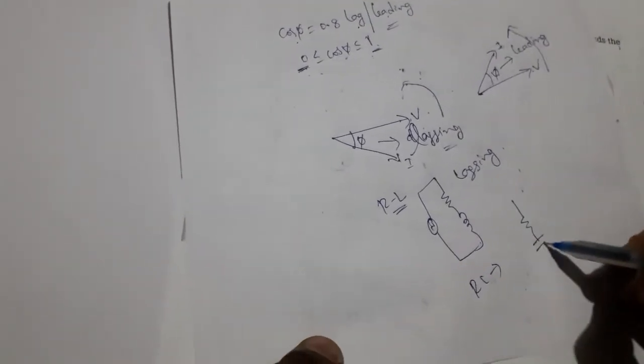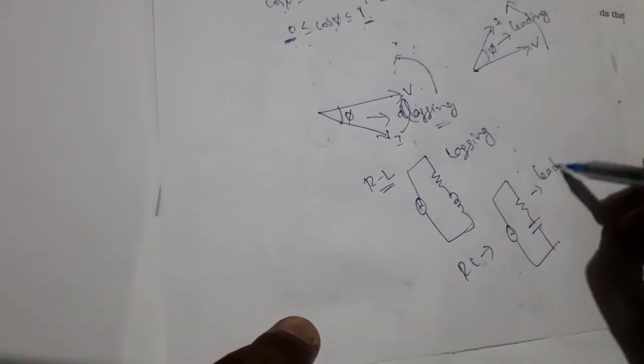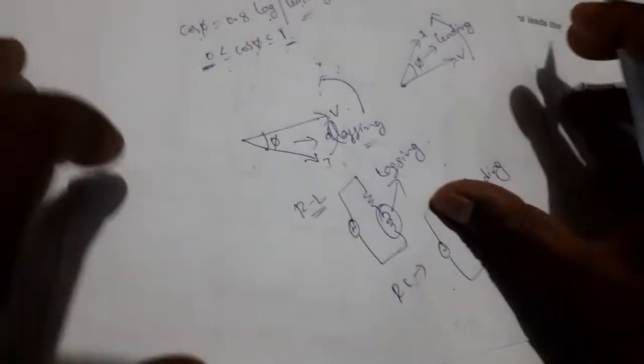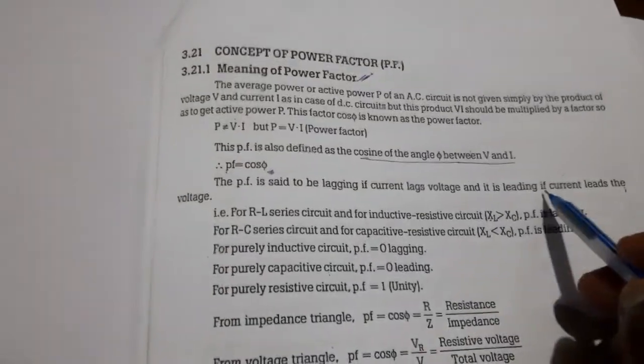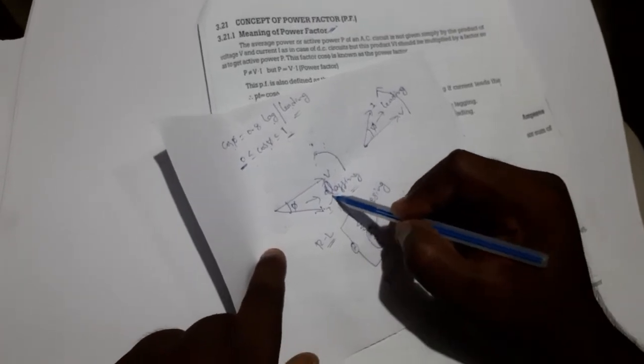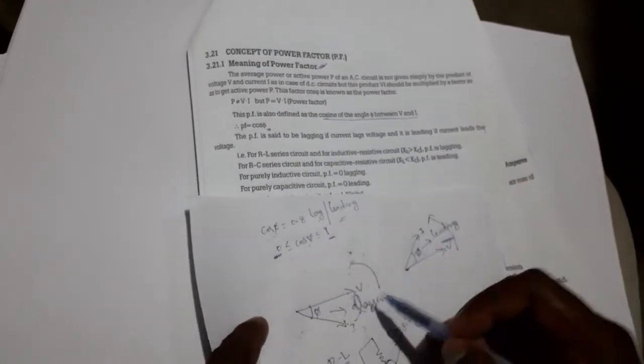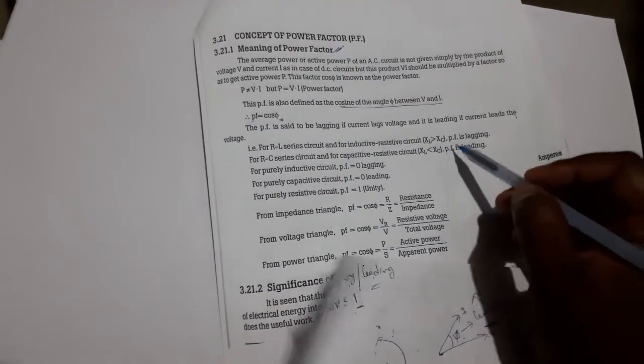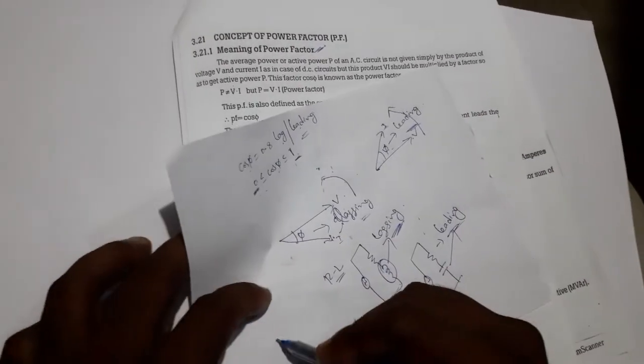Generally, in RL circuits — where resistance and inductance are present — the nature of the power factor is lagging. In RC circuits — resistor and capacitor circuits — the nature of the power factor is leading. In inductors the power factor is lagging; in capacitors the power factor is leading. The power factor is said to be lagging if current lags the voltage, and leading if the current leads the voltage.